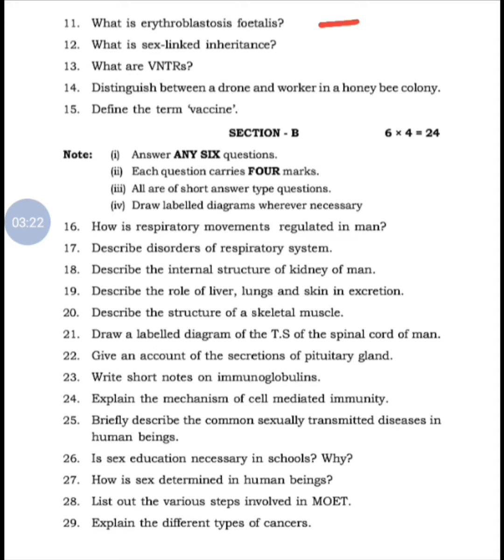Eleventh question: What is erythroblastosis fetalis? - from Chapter 6, genetics. Twelfth: What is sex-linked inheritance? - also genetics. Thirteenth: What are VNTRs (Variable Number of Tandem Repeats)? - also genetics, human genome concept. Fourteenth: Distinguish between drone and worker in a honey bee colony - from the last chapter, Chapter 8, applied biology for Telangana students.